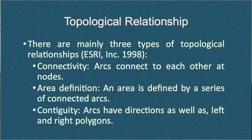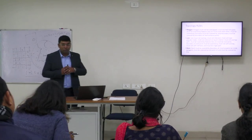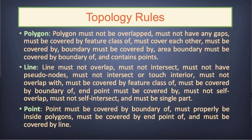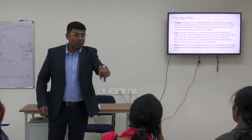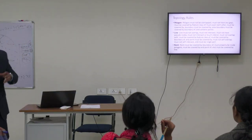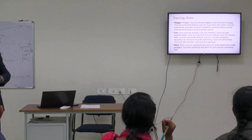There are mainly three types of topological relationships: connectivity, area definition, and contiguity. Topological rules for polygons include: polygon must not overlap, and must not have any gaps. For lines: line must not overlap, and must not intersect — as in the isoline example. For points: a point must be covered by or within a boundary — for example, a point representing Guwahati must be within the boundary of Kamrup Metro district. If it falls outside, an error will be shown. These connectivity, contiguity, and proximity relations can all be defined using topology in GIS.